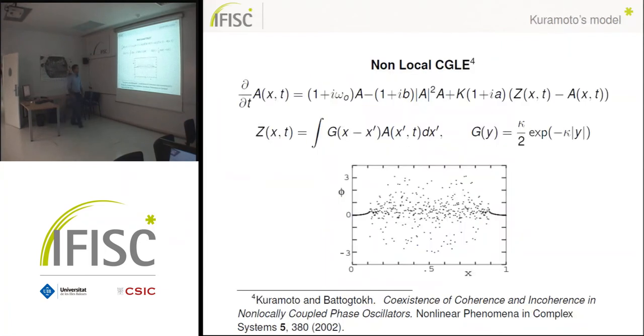And this is our last example, which is the Kuramoto model. It is a variation of the complex Ginzburg-Landau equation in which they substituted the interaction which was a second derivative in space and they introduced that non-local interaction which is formed by a kernel, which is an exponential. And it is non-local. In this figure we see the result, which is the phase of the field, and we see that there is periodic boundary conditions and we have here the coherent region and the incoherent region.